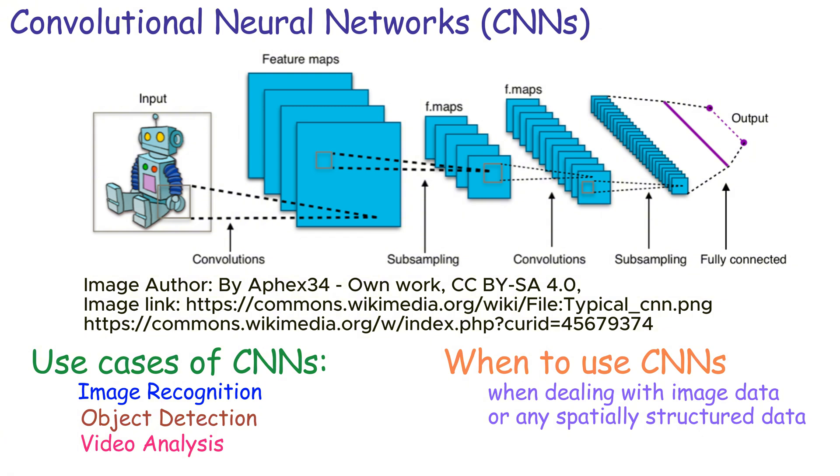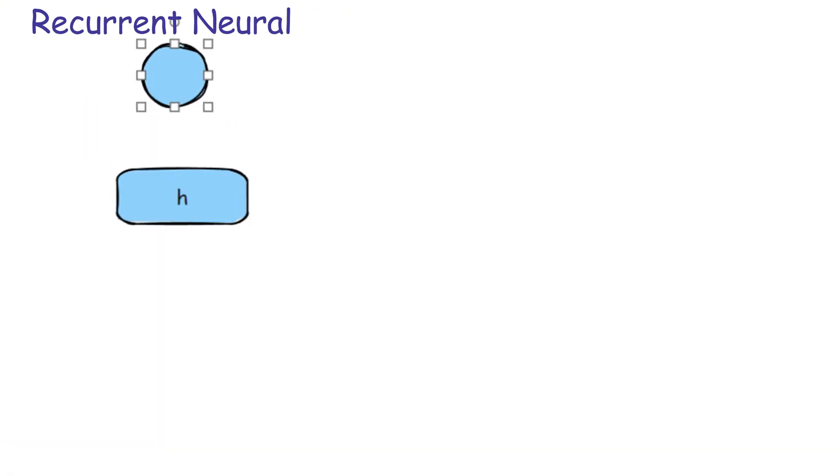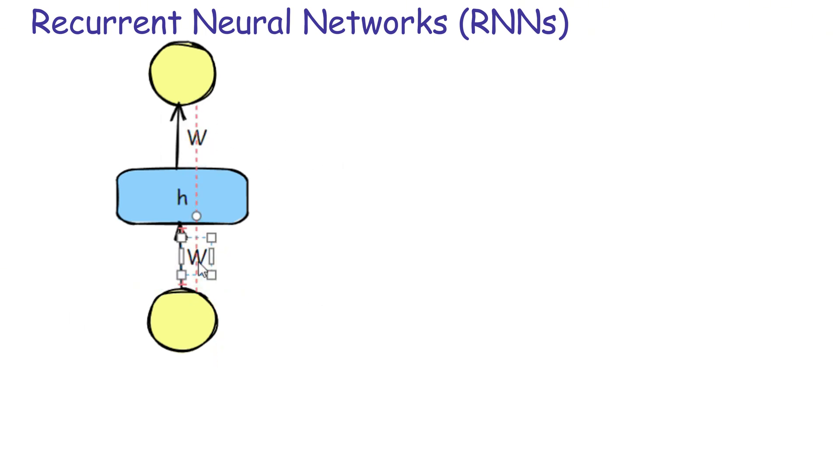Recurrent Neural Networks or RNNs. Recurrent neural networks are designed for sequential data. Unlike feedforward networks, RNNs have connections that form directed cycles, allowing them to maintain a memory of previous inputs. This makes them ideal for tasks where context or time sequence is important.